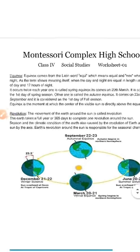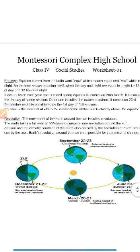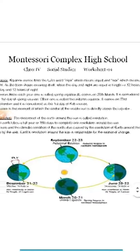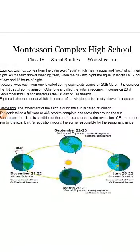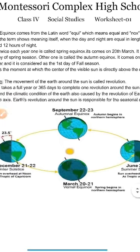Think about how many revolutions you have had in your life — as many years as you are, that many revolutions you have experienced! The seasons and climatic conditions of the earth are also caused by the revolution of the earth around the sun, combined with the axis. As the earth revolves around the sun and spins on its axis, it causes changes in the seasons. Revolution is responsible for seasonal change — whether it is winter or summer.